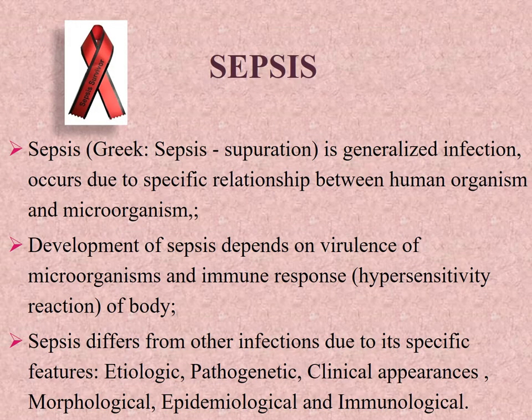Sepsis — in Greek, suppuration — is a generalized infection. It occurs due to a specific relationship between the human organism and microorganism, and its development depends on virulence of the microorganism and the immune response of the body (hypersensitivity reaction).